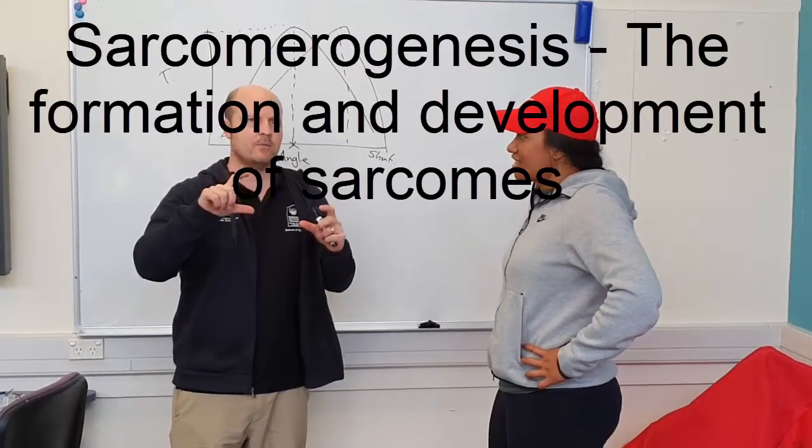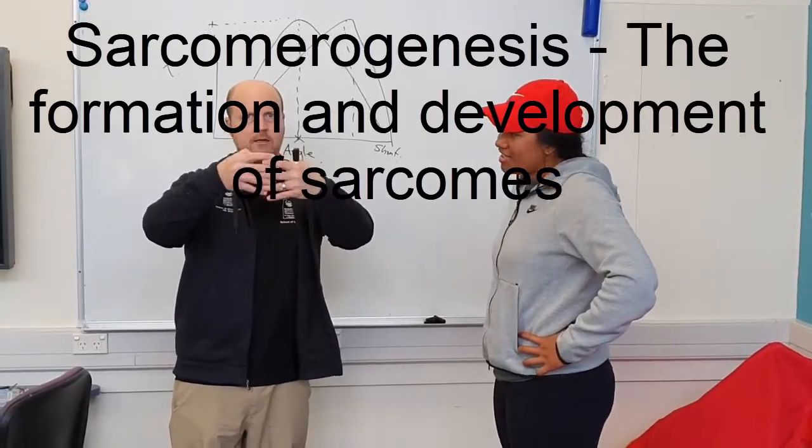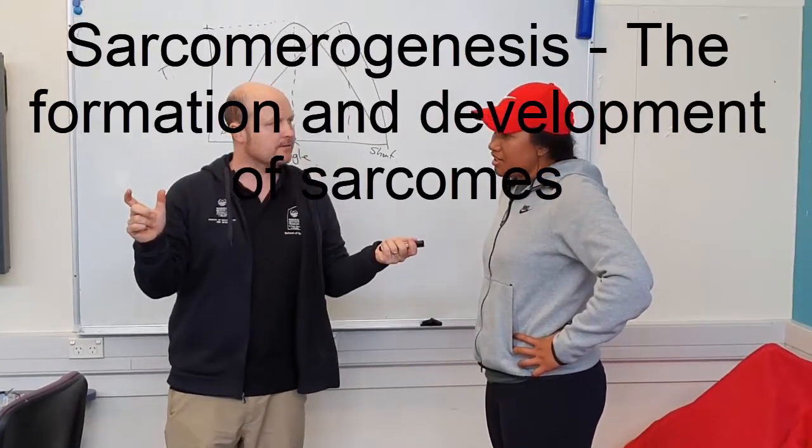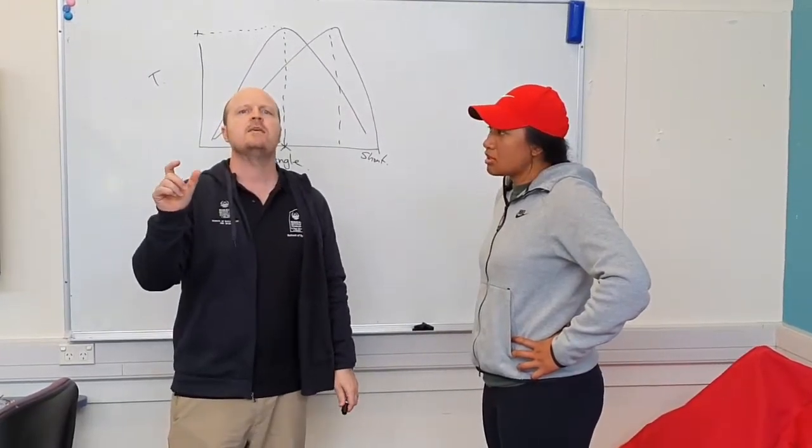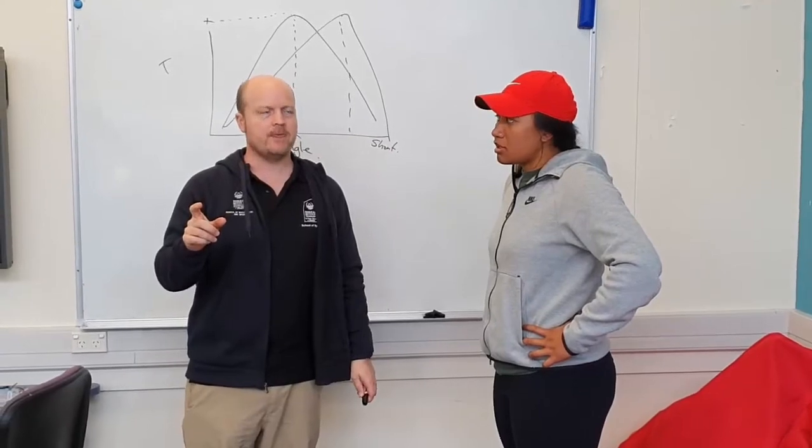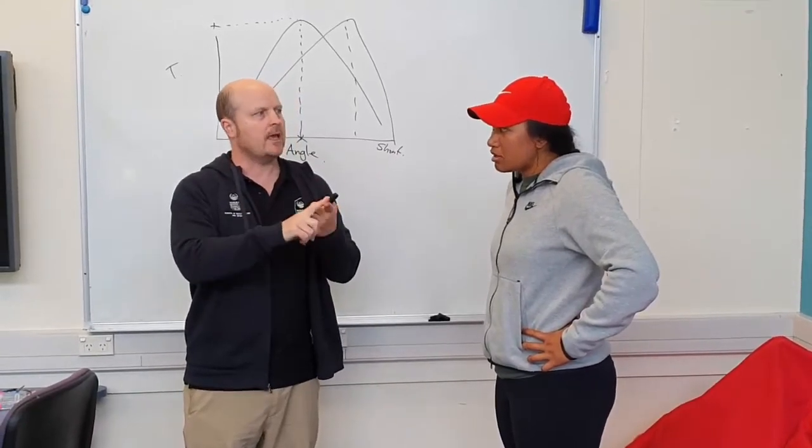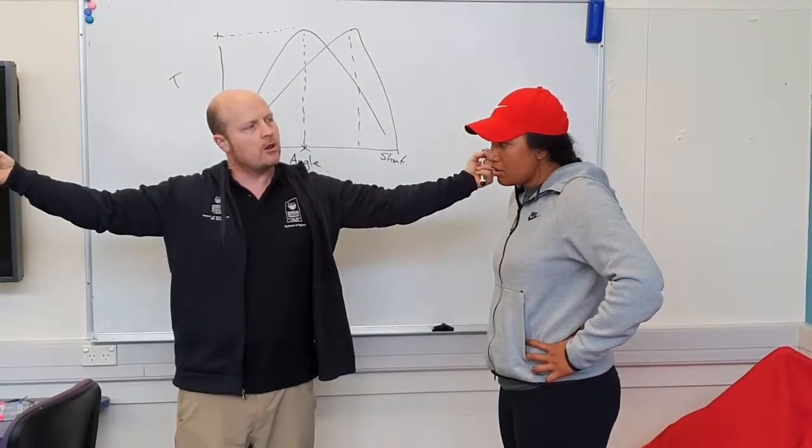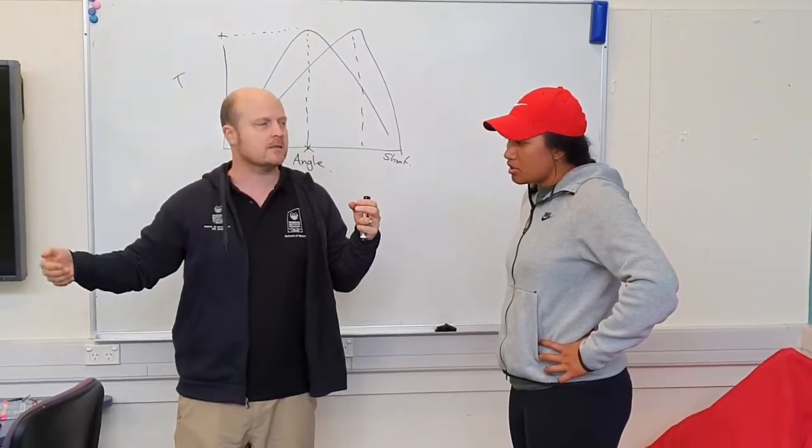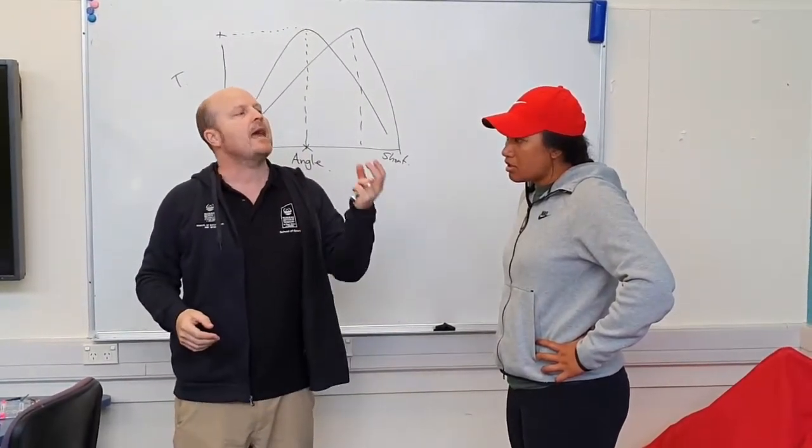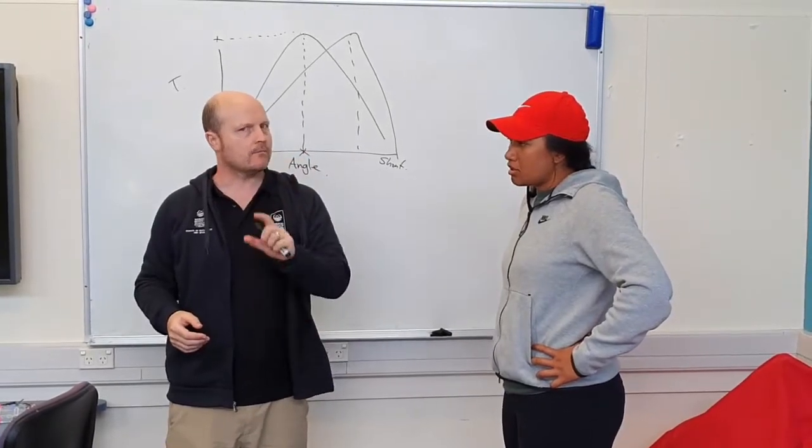Sarcomere, the contractile unit. Genesis is creation. First book of the Bible, creation. So if we get sarcomereogenesis, then we get stronger and we get longer. So our muscle will get longer because it's got more sarcomeres, and we get stronger at longer muscle lengths.